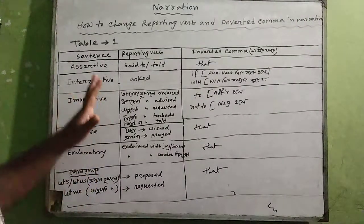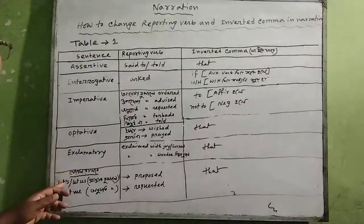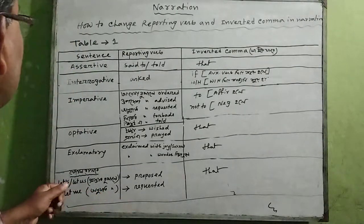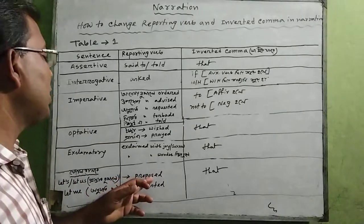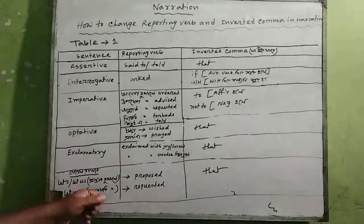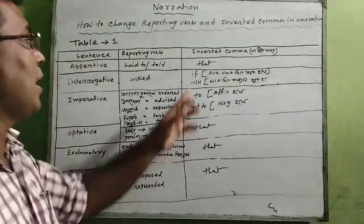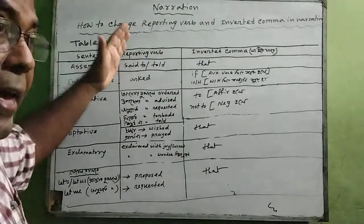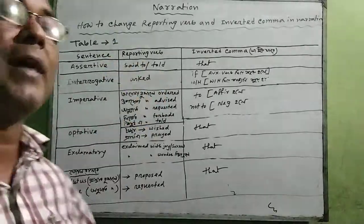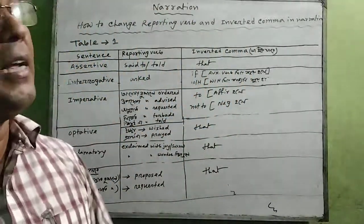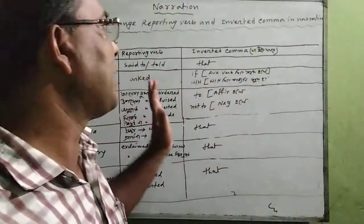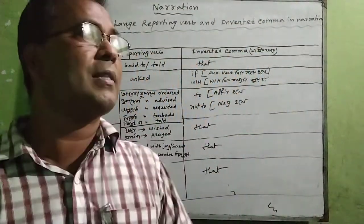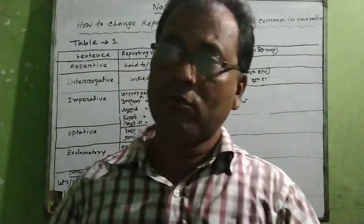My dear students, if we want to make a positive sentence, we use the reporting verb accordingly. If we do not want that, the negative form is used. My dear students, I am going to give you table number 1 to help you understand these changes. Please keep thinking about these rules and apply them.